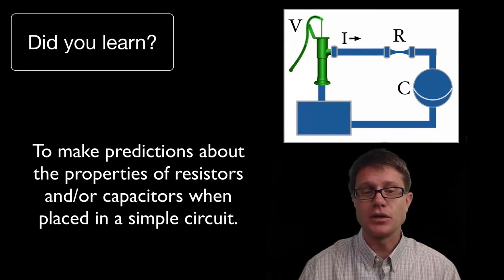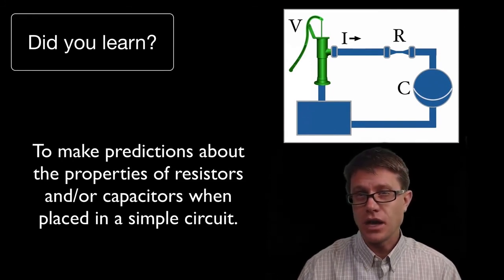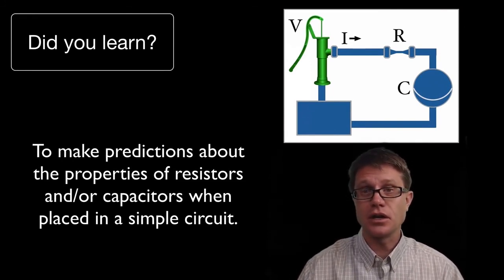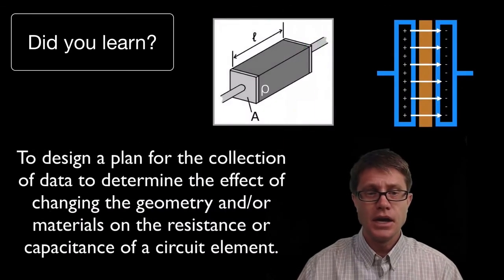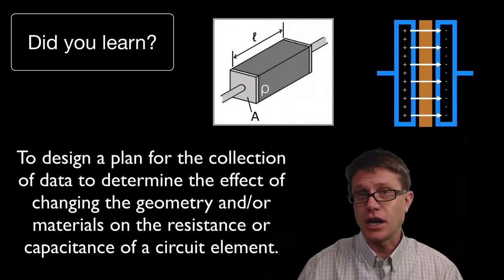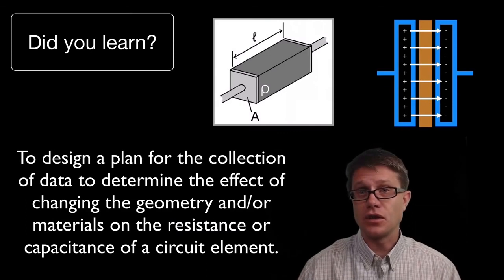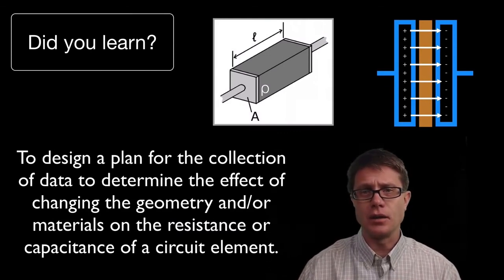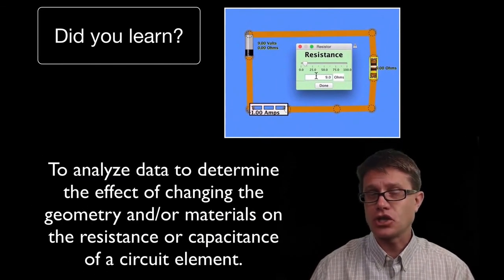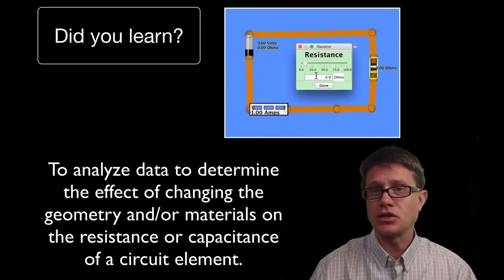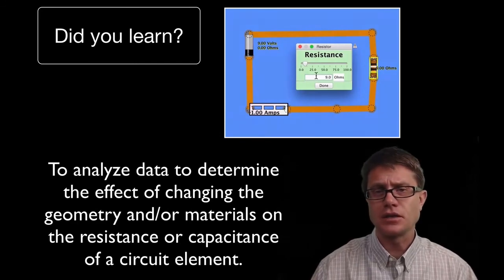Did you learn to make predictions about how resistors and capacitors work in a circuit? Remember: resistors resist flow, capacitors store energy. Could you design a capacitor and a resistor that works best — based on material and geometry? Could you analyze how changing the resistor or capacitor changes the voltage and current inside a circuit? I hope so, and I hope that was helpful.